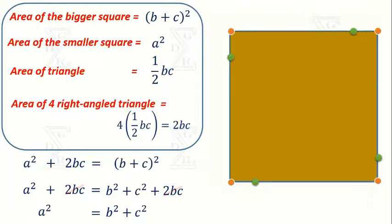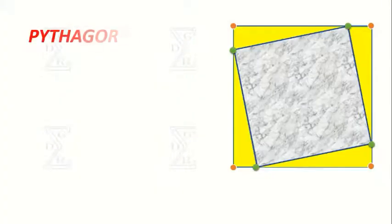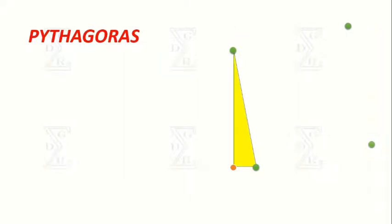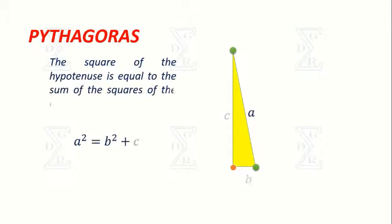So to prove the Pythagoras theorem, we take a right-angled triangle. According to the property, the square of the hypotenuse is equal to the sum of the squares of the other two sides.